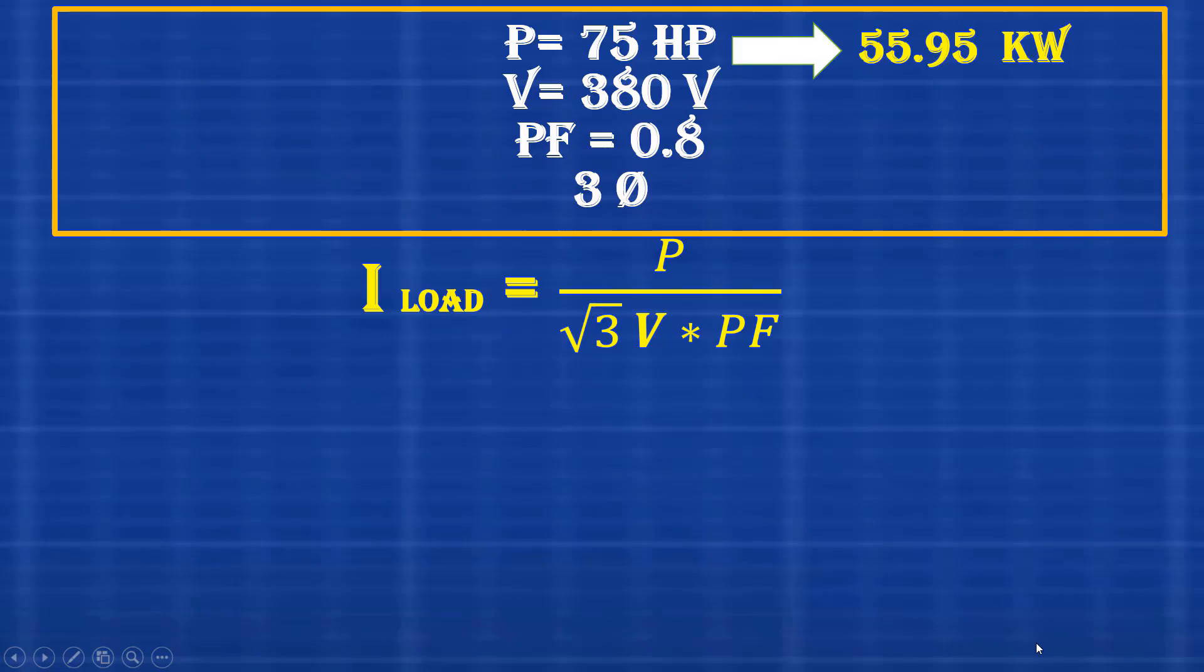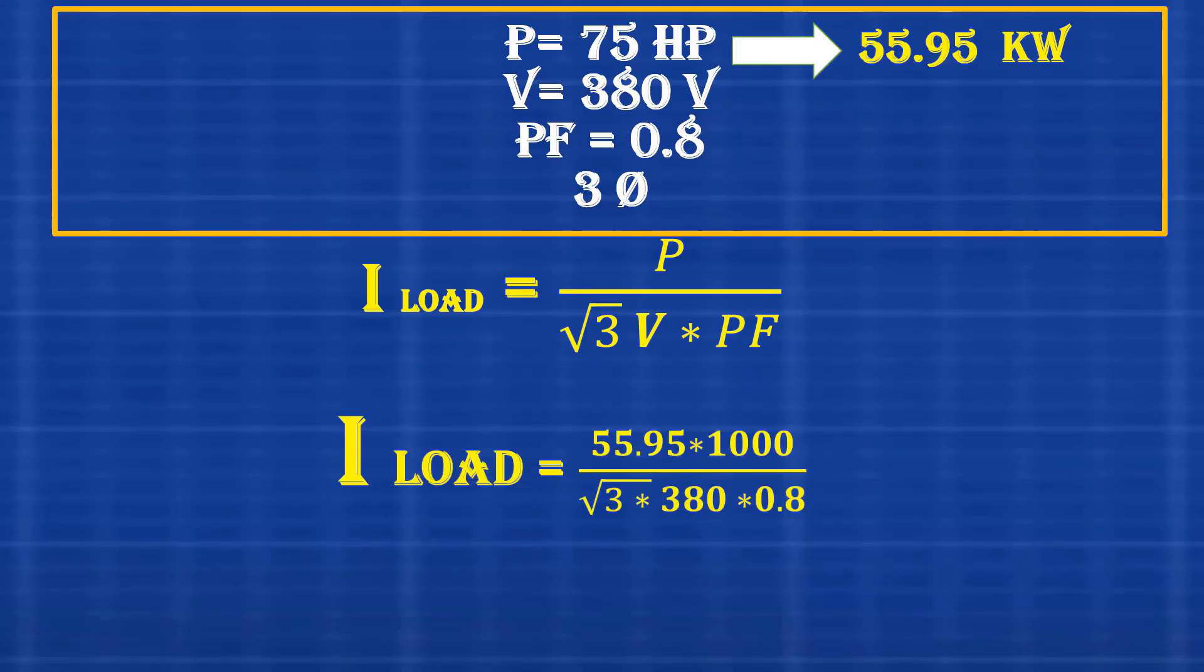Next, we calculate the load current. By applying the formula, we get load current equals 55.950 divided by square root of 3 multiplied by 380 multiplied by 0.8. The result is approximately 106.4 amperes.